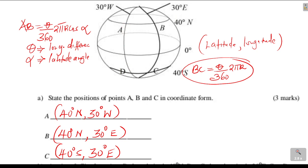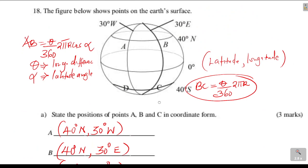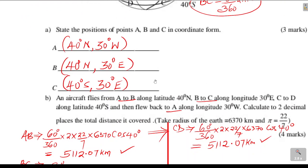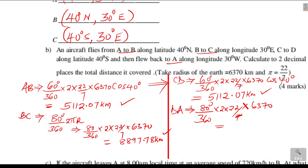A is at latitude 40 degrees north and D is at 40 degrees south, so the latitude difference is 40 plus 40 equals 80 degrees. DA = 80 over 360 times 2 pi times 6370, giving the same distance as BC: 8,897.78 kilometers.